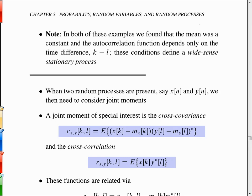If the autocorrelation is only a function of the time difference and the mean is a constant, then we have what's called a wide-sense stationary process.